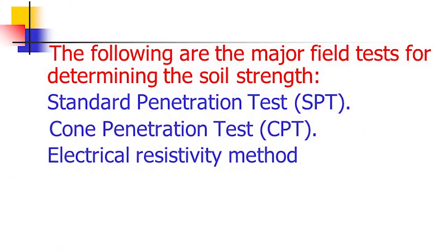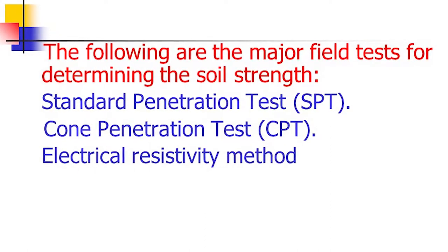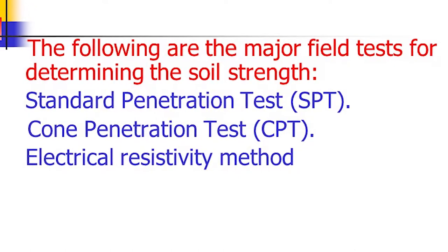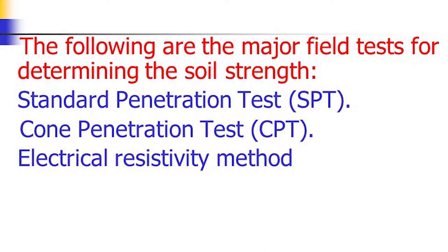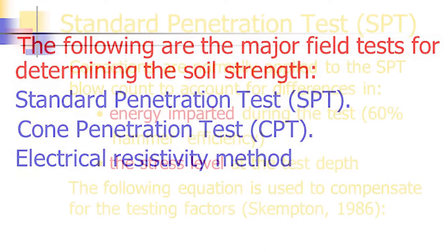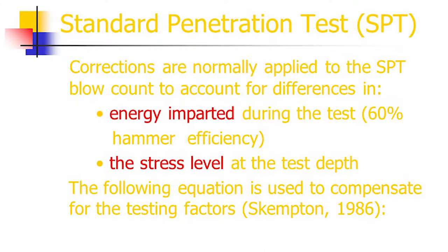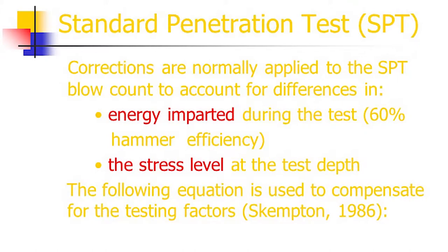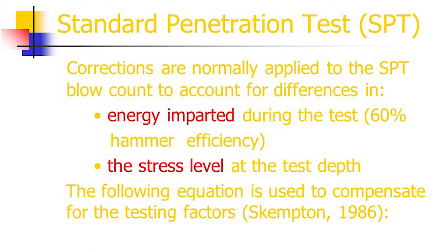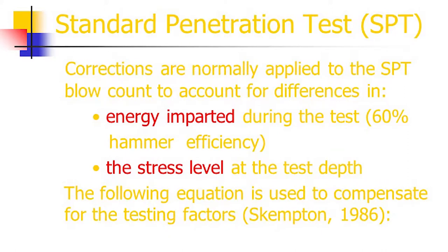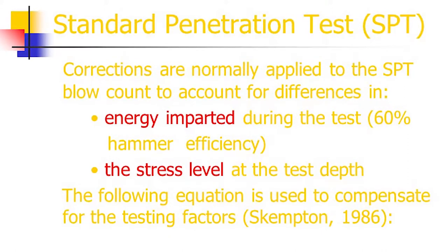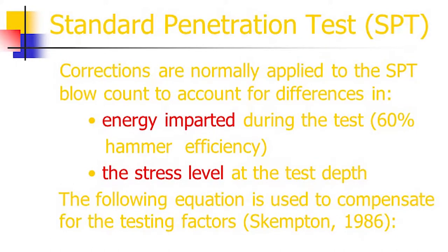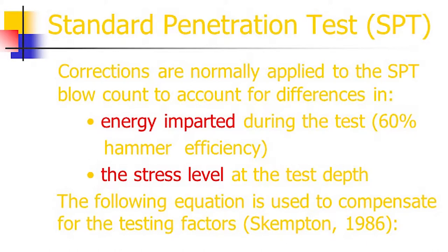The major field tests for determining soil strength include the Standard Penetration Test (SPT), Cone Penetration Test (CPT), and electrical resistivity method, which are included in geotechnical investigations. Corrections are normally applied to the SPT blow count to account for differences in energy imparted during the test, hammer efficiency, and the stress level at the test depth.